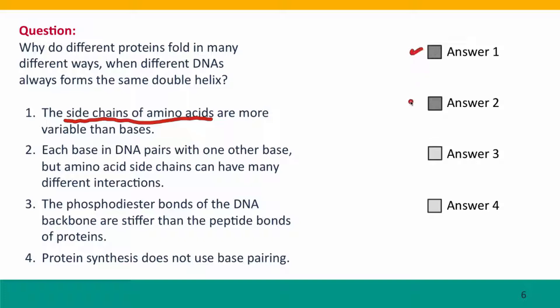The other reason is that amino acid side chains can have many different interactions. They're not constrained with just pairing with one partner. Even different parts of the same amino acid side chain can interact with different parts of the protein.